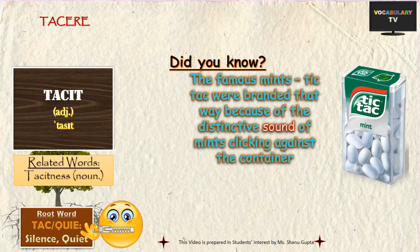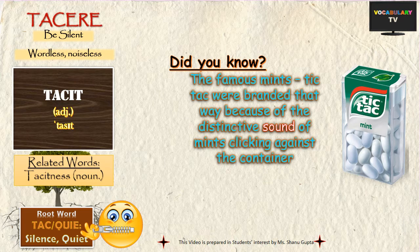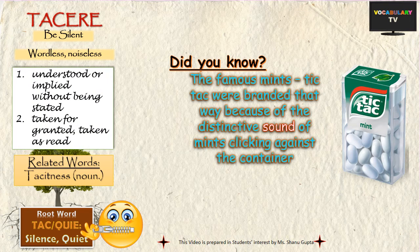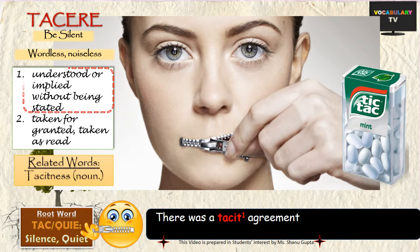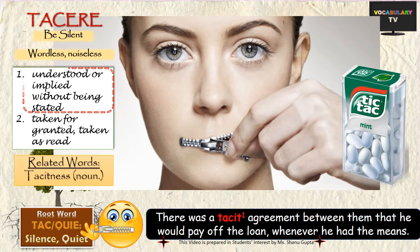The word root TAC and its variant TIC both mean silence, and the most celebrated word based on the root is TACIT. Since the root TACERE means to be silent, TACIT originally meant wordless or noiseless. Nowadays, TACIT is used in a scenario where something is understood or implied without being stated explicitly. For instance, there was a tacit agreement between them that he would pay off the loan whenever he had the means.